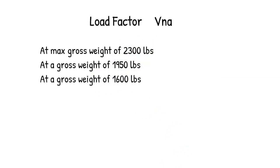at 2,300 pounds, the max maneuver airspeed is 97 knots. At 1,950 pounds, the max maneuver airspeed is 89 knots. And at the lowest weight of 1,600 pounds, you can only fly 80 knots to remain within Va.